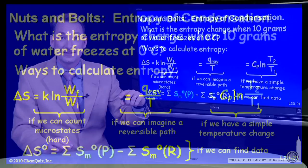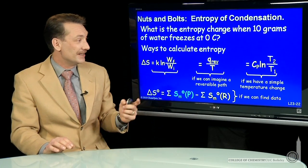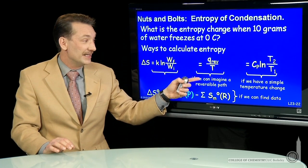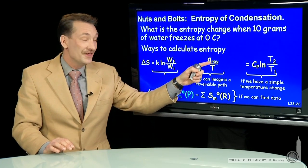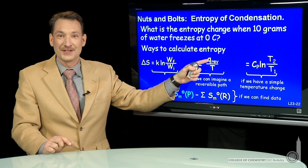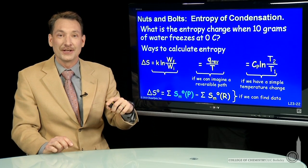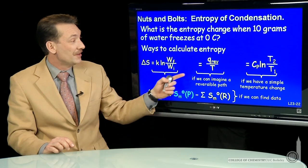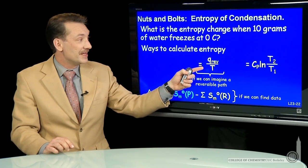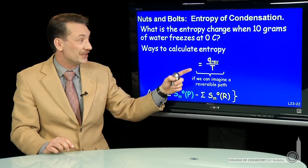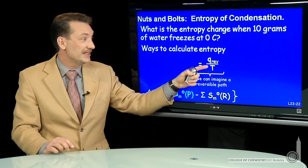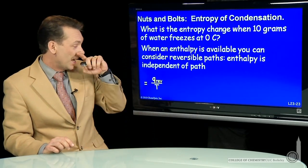In this case, what we have is an easily calculatable enthalpy change for this reaction at a constant temperature, the melting point or the freezing point. So I choose the middle equation here, the reversible heat over the temperature change. So let's just do that.